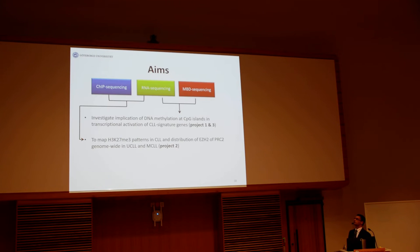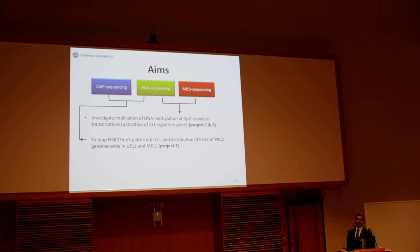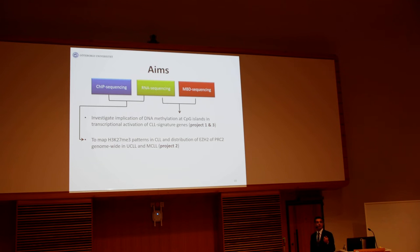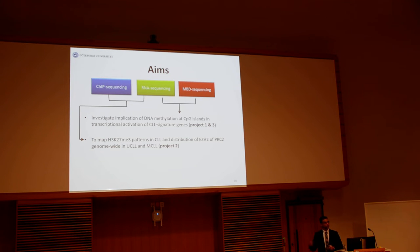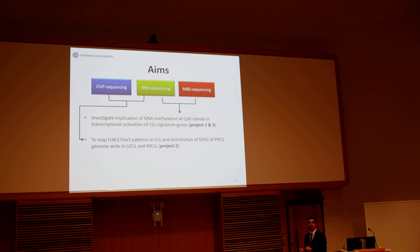Coming to my thesis — what we wanted to do. We made use of next-generation sequencing techniques, and we wanted to investigate the possible implication of DNA methylation in a non-canonical mode of action in transcription and activation of CLL, and that would be the topic for project number one and project number three. For the second project, by means of ChIP sequencing, we wanted to map the global distribution patterns of EZH2, which is the catalytic subunit of Polycomb repressive complex 2, and its prototypical mark H3K27me3 in the two subgroups of CLL — mutated and unmutated.